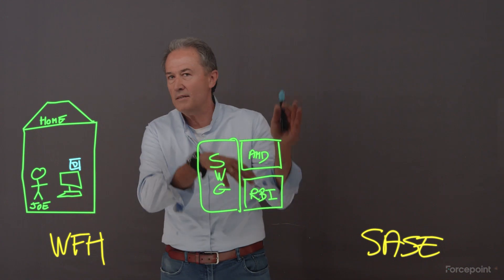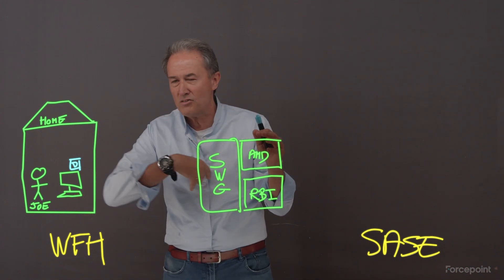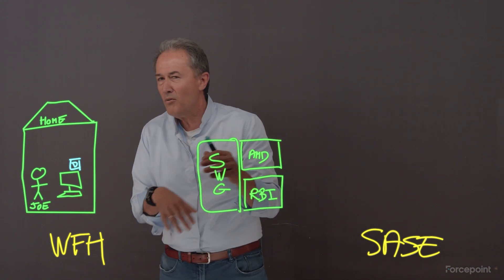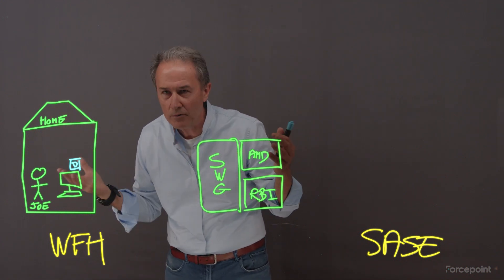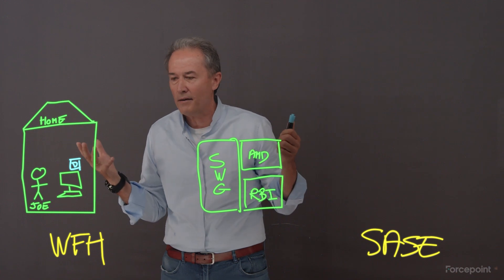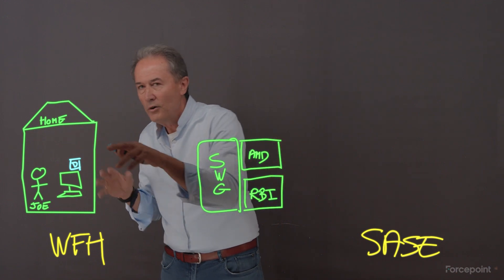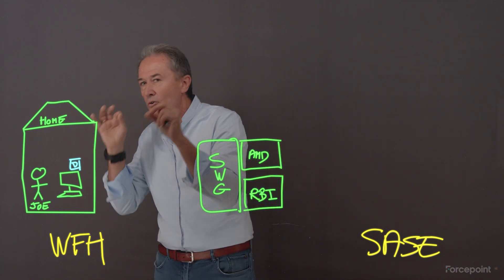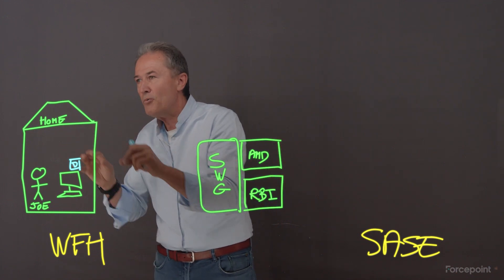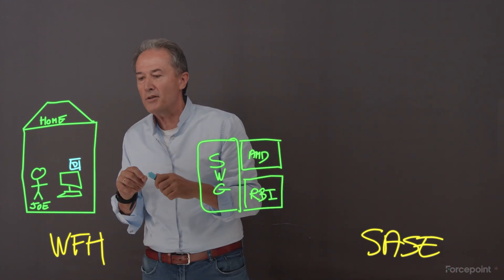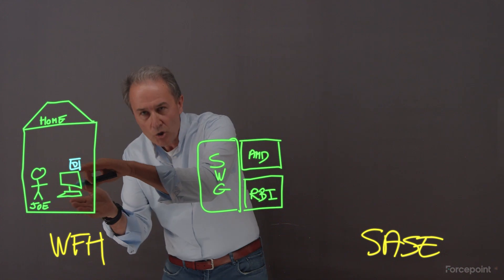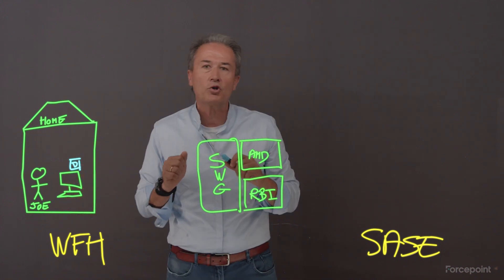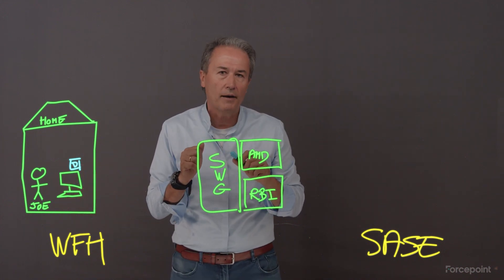We don't want to see the Netflix traffic — just drop it. We don't want to see Joe's Wells Fargo banking traffic either. So it's really very important to have a very intelligent endpoint to connect Joe to the cloud.